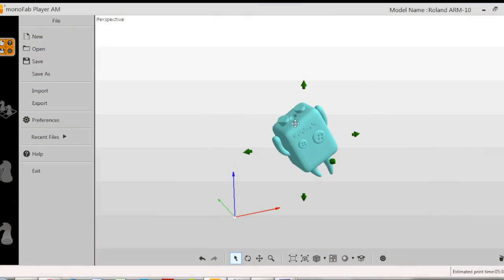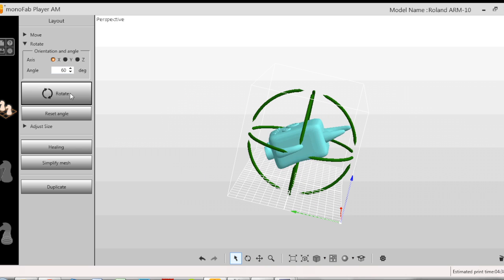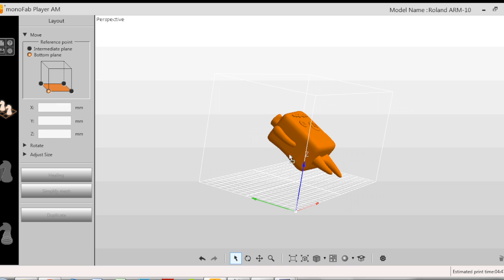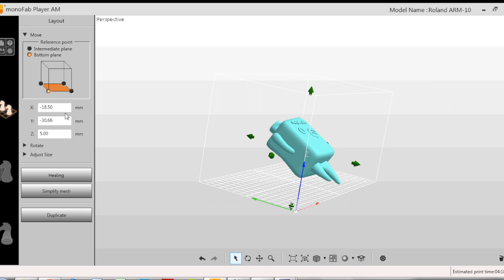Today we're going to be printing a monster figurine on the Roland Monofab ARM10. As you can see I've imported the file into the software. I'm just going to rotate it to 60 degrees and then move it to about 5mm off the build plate.